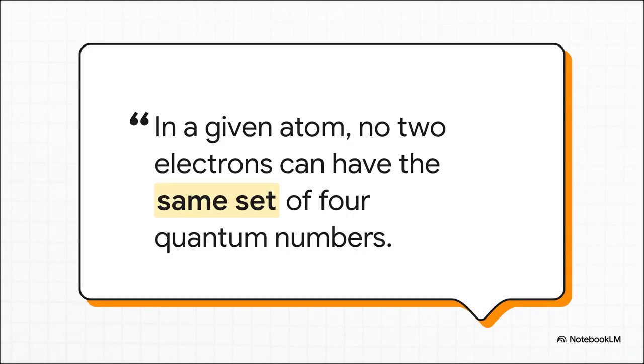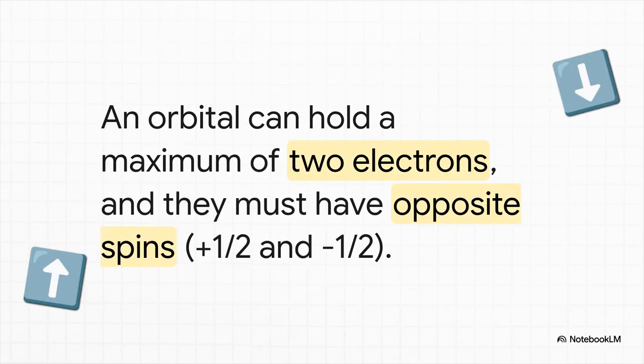And this is it, the Pauli exclusion principle, named for Wolfgang Pauli. This is, without a doubt, one of the most fundamental laws in all of quantum mechanics. And what it says is that no two electrons in the same atom can have the exact same four-number address. At least one number has to be different.